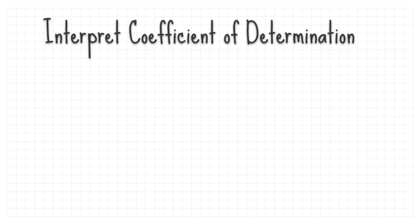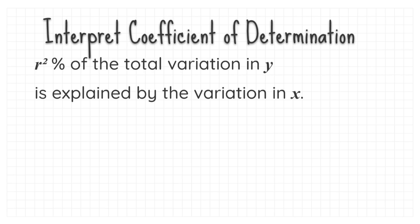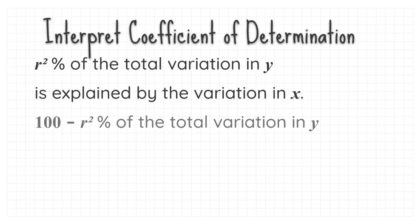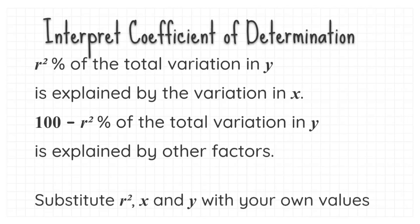To interpret the coefficient of determination: r-squared percent of the total variation in y is explained by the variation in x. And (100 minus r-squared) percent of the total variation in y is explained by other factors. All you have to do is substitute your r-squared, x, and y with your own values.